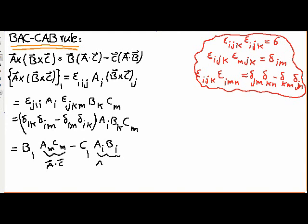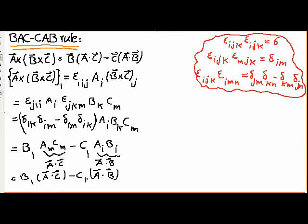Therefore the X component equals b_1 times (A dot C) minus c_1 times (A dot B), which matches the first component of the right-hand side: the first component of B times scalar (A dot C), minus the first component of C times scalar (A dot B). The same argument applies for components 2 and 3, proving the BAC-CAB relation completely.